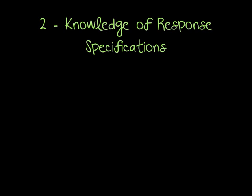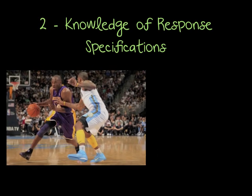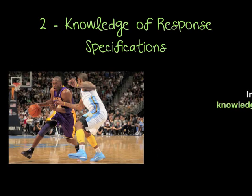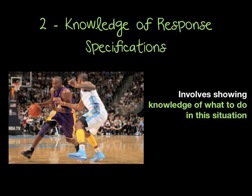Memory item two is the knowledge of response specifications. Here we have Kobe Bryant. The knowledge of response specifications involves showing knowledge of what to do in this situation. Once I've recognised whether I've seen this situation before, I'm then going to think: do I pass, do I dribble, or do I shoot? What do I do in this situation?